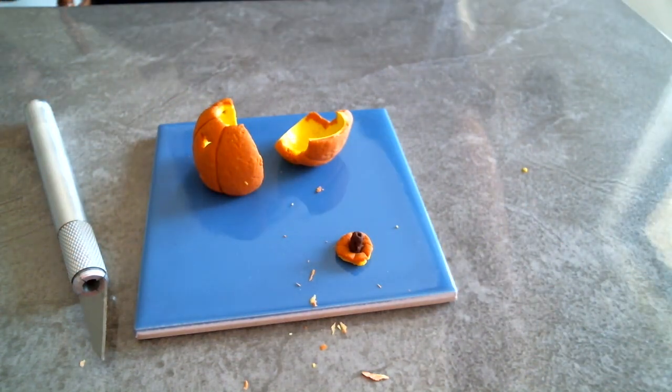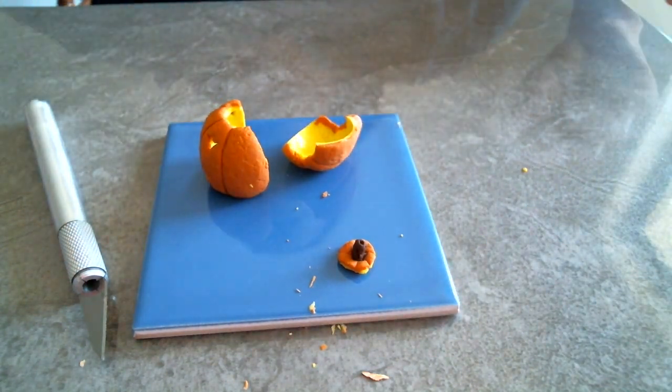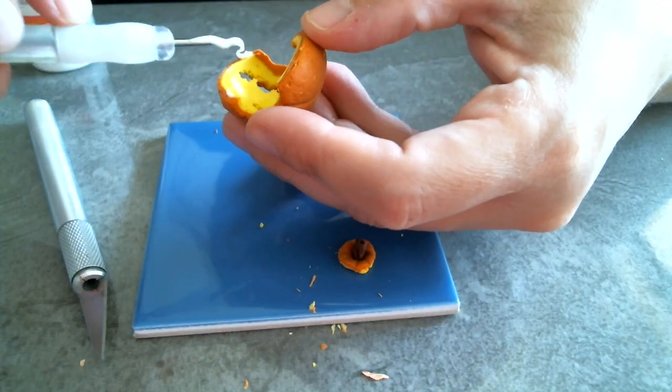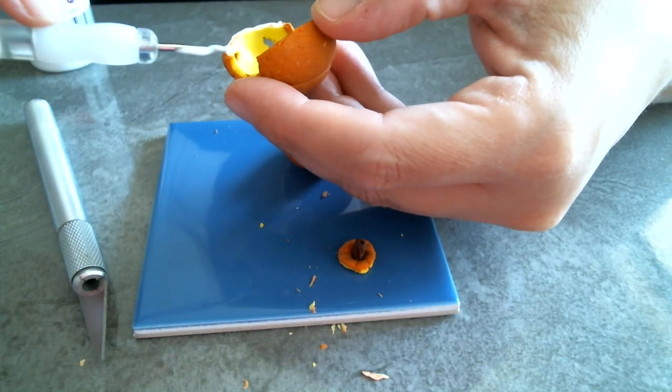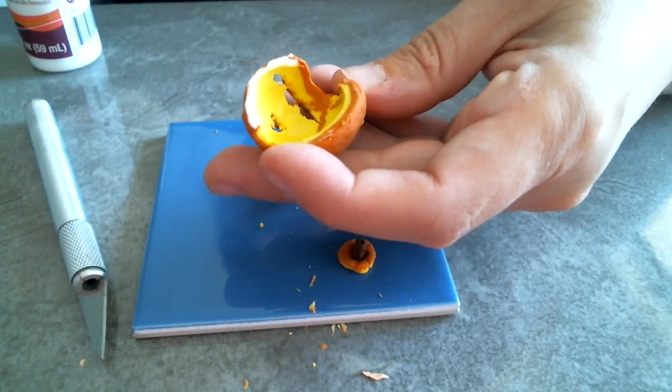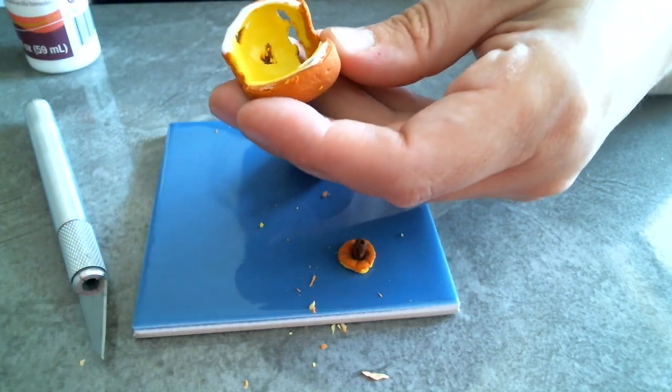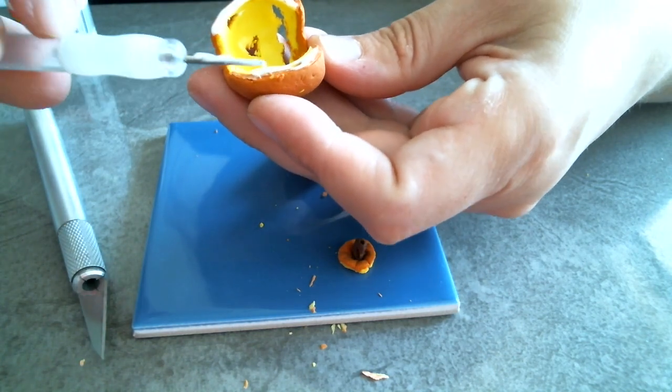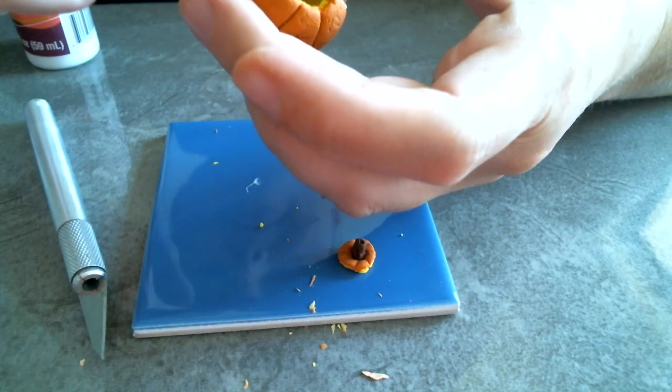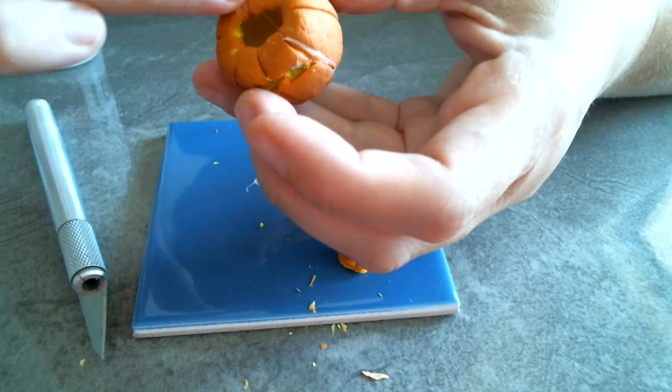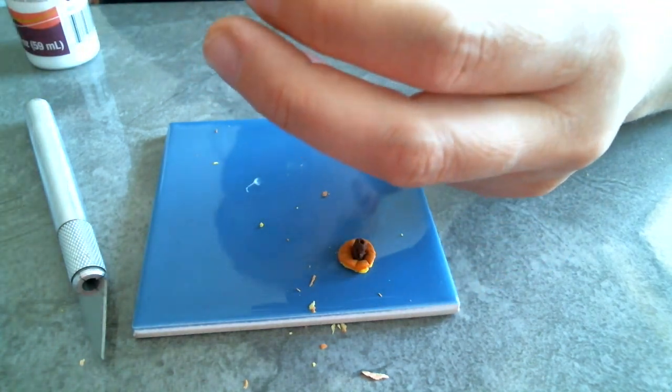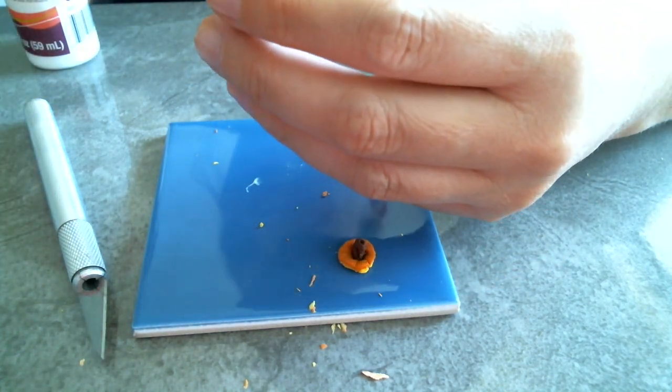Then you get your Sculpey Bake and Bond and just put it on the sides. I hate it when it gets too thick because this stuff bakes clear, but you can still see it. So I try to hide it where it is, try not to have it gooped everywhere. So you smooth it down and make sure it's all good. And then you put it back in the oven for about 20 minutes and Bob's your uncle.